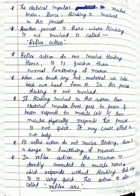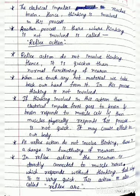The electrical impulses reach the brain. Hence, thinking is involved in this process. Another process exists where thinking is not involved — that is called reflex action. Reflex action does not involve thinking, hence it is quicker than the normal functioning of a neuron.